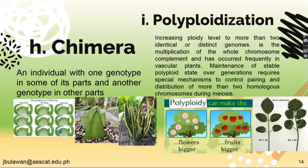The chimera is an individual with one genotype in some of its parts and another genotype in other parts. The genotype refers to the internal genetic characteristics of an individual — in plants and even animals. While the phenotype represents the physical traits and physical characteristics of certain individuals, especially in plants.